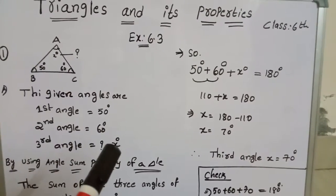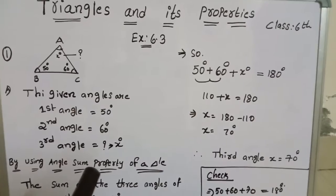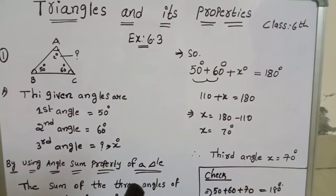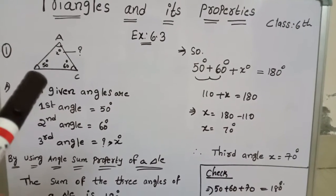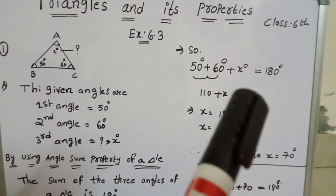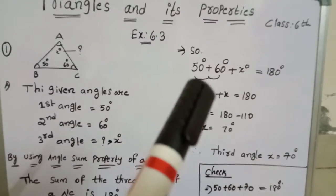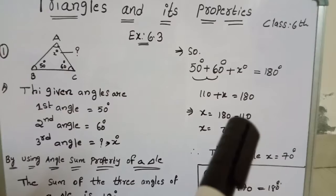Now we have to find this X value by using angle sum property of a triangle. So just add these 3 angles. 50 plus 60 plus X equal to 180 degrees. 50 plus 60 is 110 plus X equal to 180.